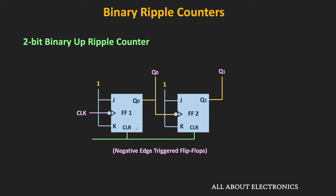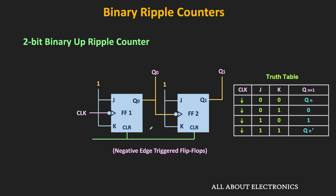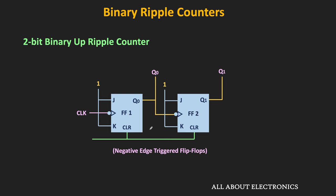JK flip-flops have been selected and used in the toggle mode. To use the JK flip-flop in the toggle mode, both inputs J and K should be connected to logic 1, so that at every clock pulse the output of the JK flip-flop will toggle. Similarly, we can also use the T or D flip-flop in the toggle mode, and later I will show how to design the same counter with D and T flip-flops.